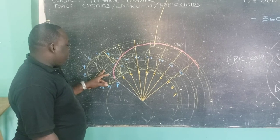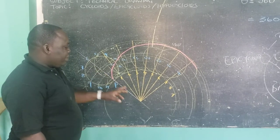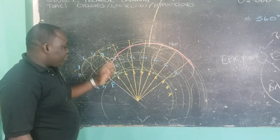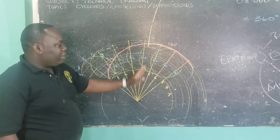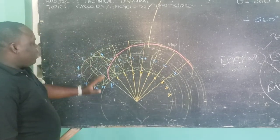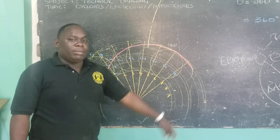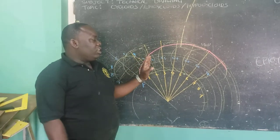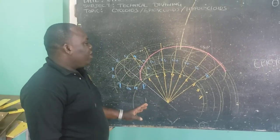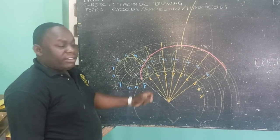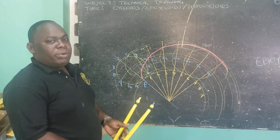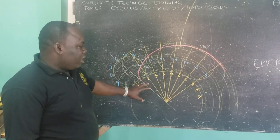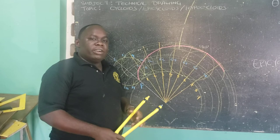Every position has centers drawn on the same line. Once you have plotted point P as it makes one complete revolution, you have your epicycloid. We encourage students to draw your epicycloid. From here, our next drawing will teach the principles of how to draw your hypocycloid — where the rolling circle rolls on the inside of your base circle.